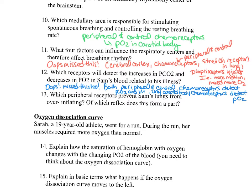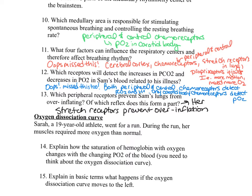Number thirteen: which peripheral receptors prevent Sam's lungs from over-inflating, and of which reflex does this form a part? The stretch receptors in the lung and the chest wall send signals that inhibit both the inspiratory area (the dorsal respiratory group) and the apneustic area in the pons, thus preventing over-inflation of the chest wall and lungs. This is known as the Hering-Breuer reflex.